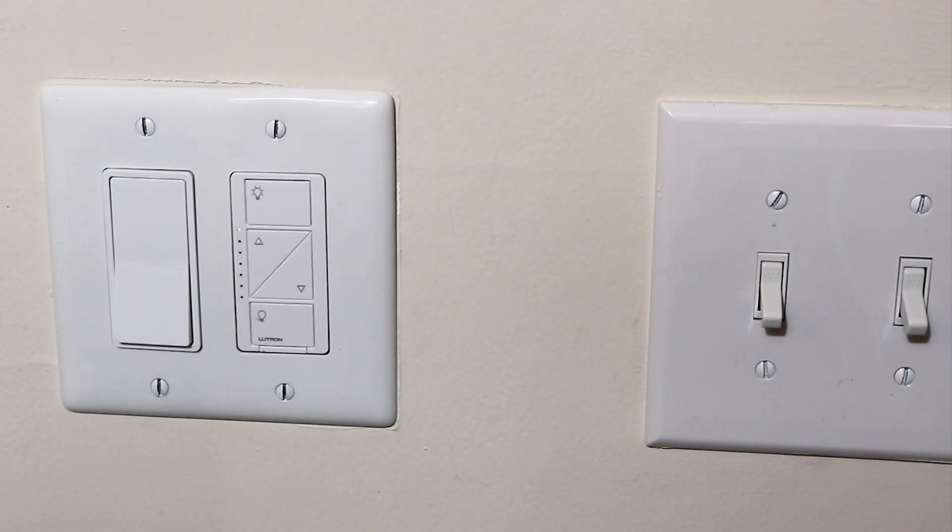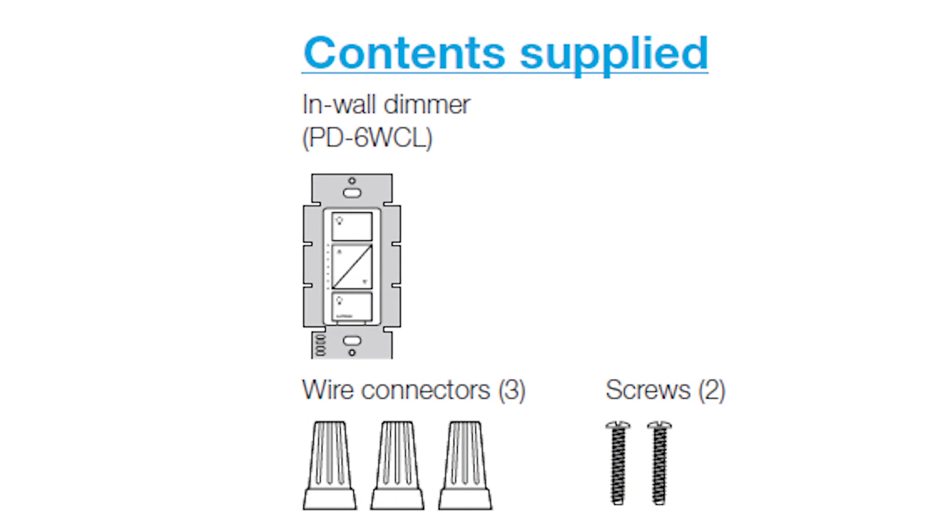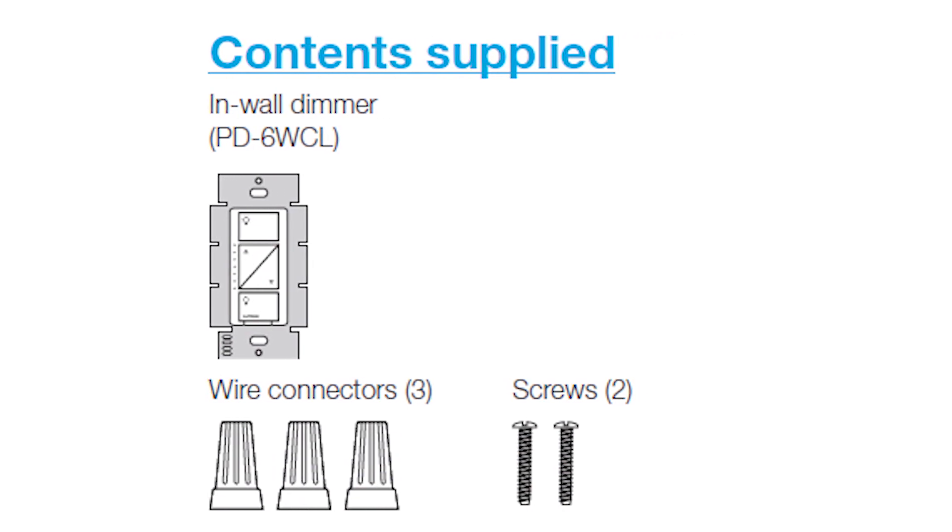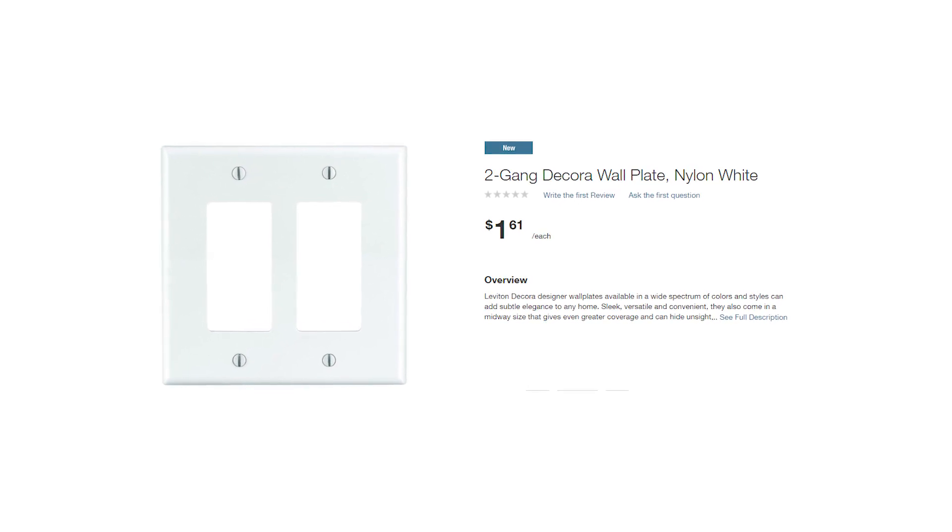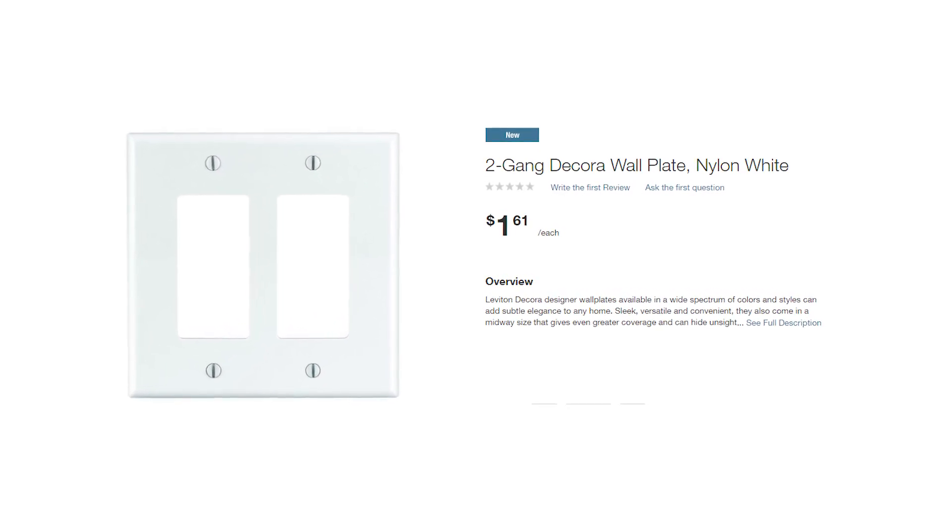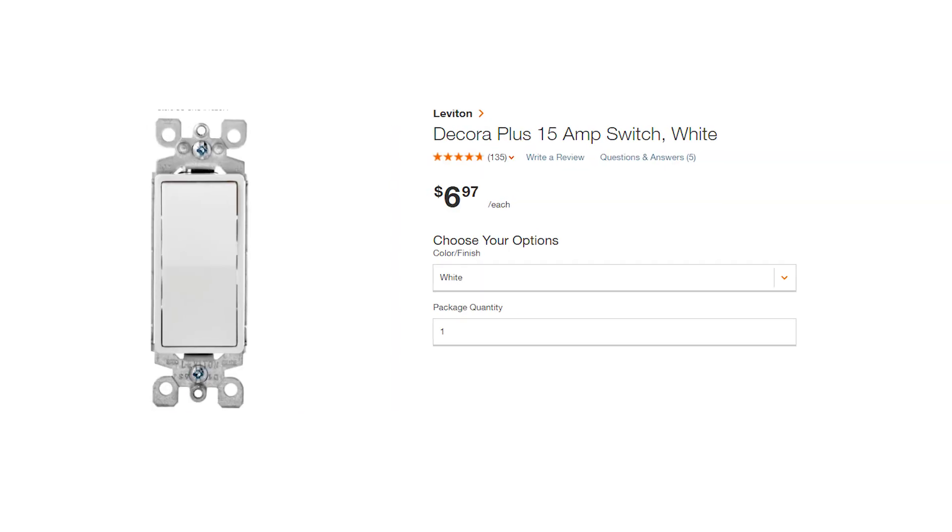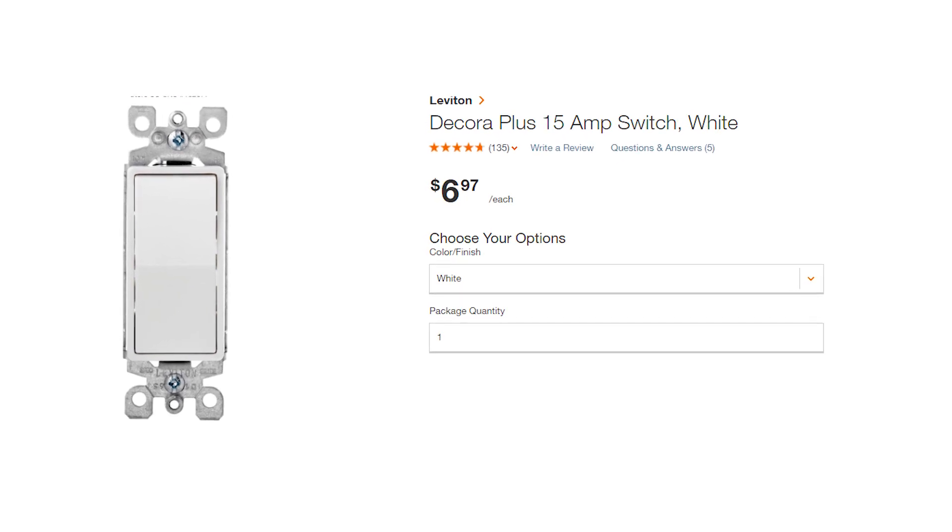Here you can see we replaced our traditional light switch with the Lutron wireless light switch. We got the switch, three connectors, and two screws in the box with a wall plate but we didn't use it. So we had to get a different wall plate because we had a double. And we didn't need a second smart switch so we just got a regular switch.